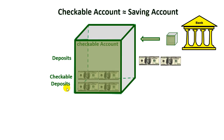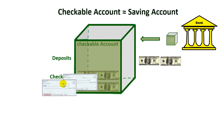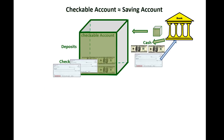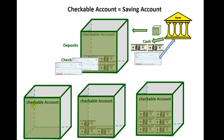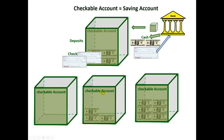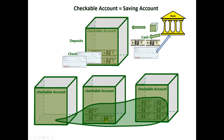The money that remains in the commercial bank is what is called checkable deposit. These deposits are checkable, which means that you give a check to the bank and then you get money from the bank. So if this is the checkable account of poor people, this is the checkable account of average people, and this is the checkable account of rich people in the whole country — then all of this money represents the checkable deposit of the whole country.